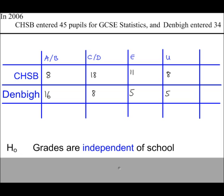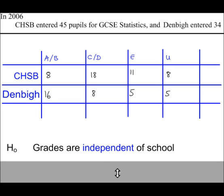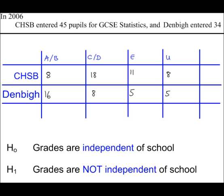H0, the grades are independent of school. H1, the grades are not independent of school. So this type of test can be used where you have two variables and you're testing to see if they're independent of each other or not.